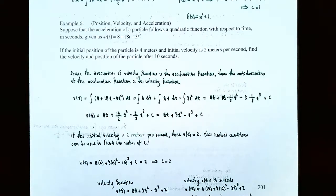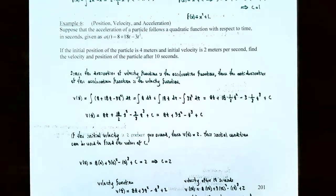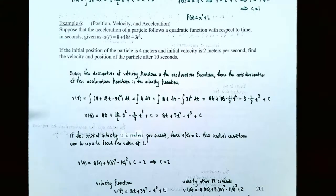The previous example was an initial condition problem for a differential equation from mathematics. Now let's talk about physical sciences. Example 6: position, velocity, and acceleration of an object. Suppose that the acceleration of a particle follows a quadratic function with respect to time t in seconds: a(t) = 8 + 18t − 3t². If the initial position of the particle is 4 meters and the initial velocity is 2 meters per second, find the velocity and position of the particle after 10 seconds. Initial position and initial velocity mean no time has passed, so t = 0.